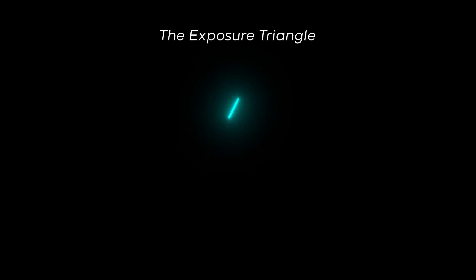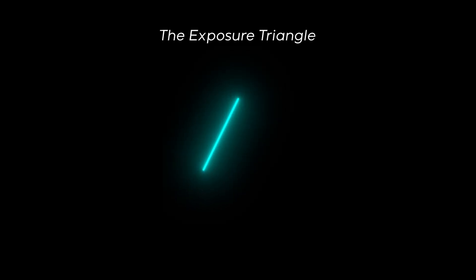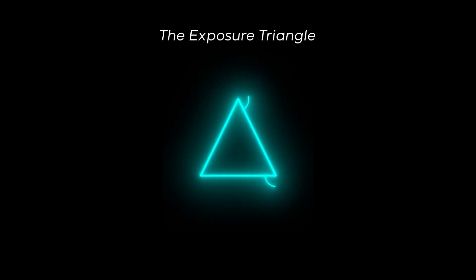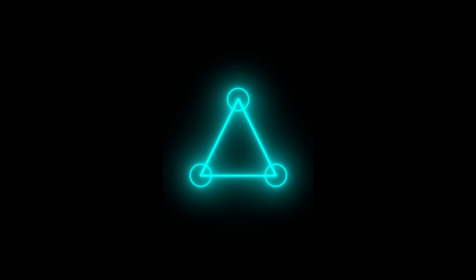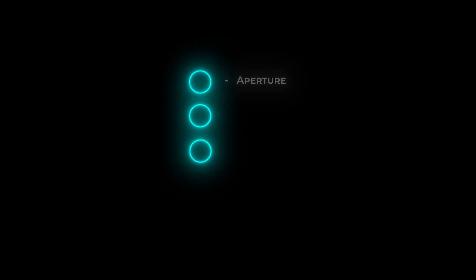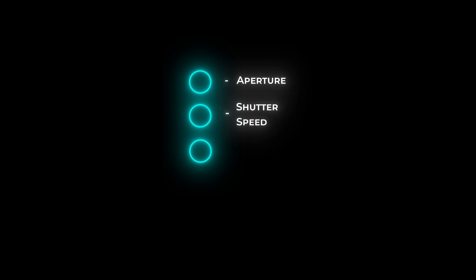Welcome to the video on the exposure triangle. The exposure triangle is the key to unlocking the full potential of your camera and capturing stunning images. In this video, we'll demystify the technical jargon and break down the three components of the exposure triangle: aperture, shutter speed, and ISO. Get your cameras ready because by the end of this video, you'll be a pro at mastering the perfect exposure.